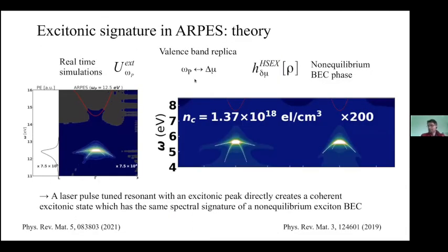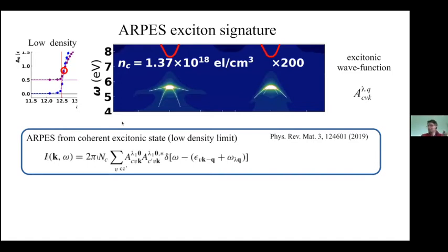Both in the real-time simulations and in the non-equilibrium Hamiltonian approach, we get this fingerprint of the excitonic state: a signal below the conduction band, with a distance from the conduction band equal to the exciton binding energy, and with a shape that is a replica of the valence band. One can also play further with the equations in the low-density regime. In the self-consistent procedure at low density, the signal has this shape: a delta function that is the replica of the valence band shifted by the excitonic peak, with intensity modulated by the excitonic wave function. This result was already present in the literature, derived in a different way, and was generally derived for non-coherent states.